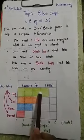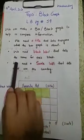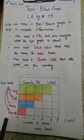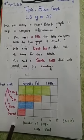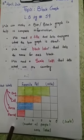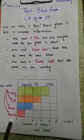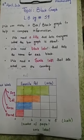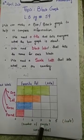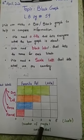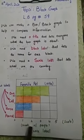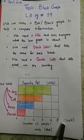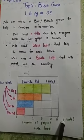It tells us which objects we are going to discuss. We need block labels that tell the name of each block — like dog, cat, horse, parrot — anything we are going to discuss. These are the block labels. We also need scale labels. As I write 'number of people,' scale labels always go like 0, 1, 2, 3.